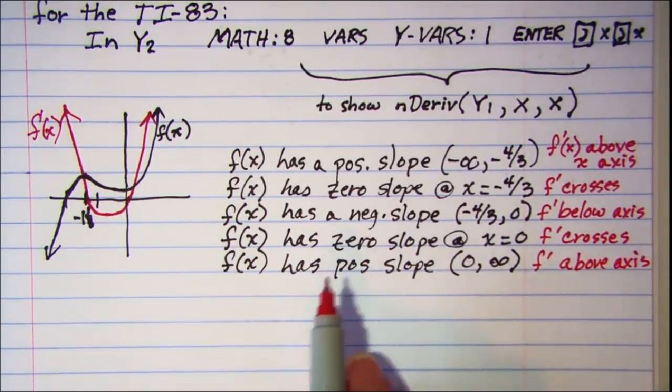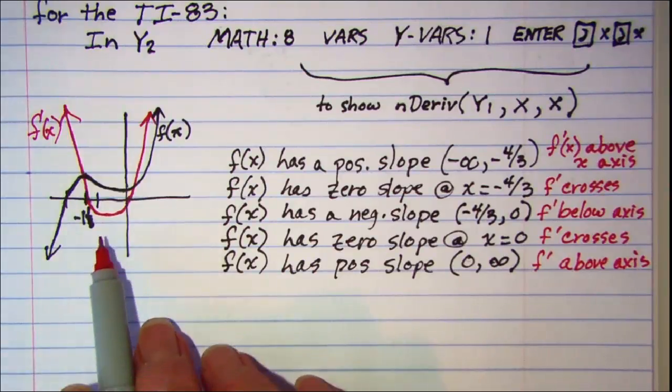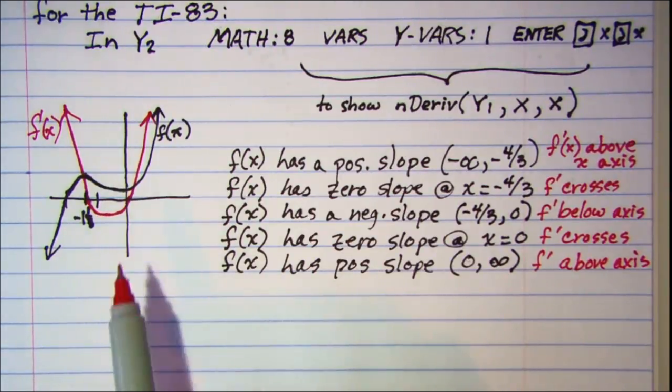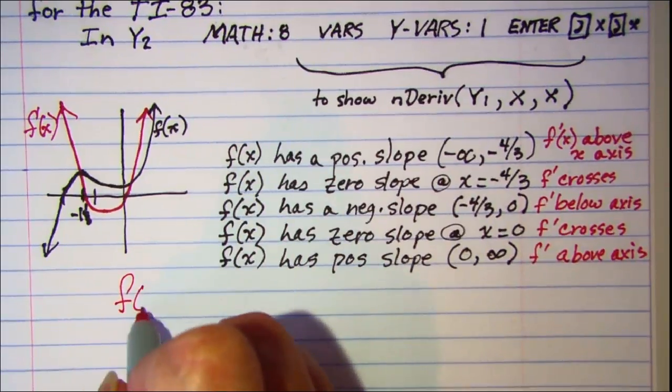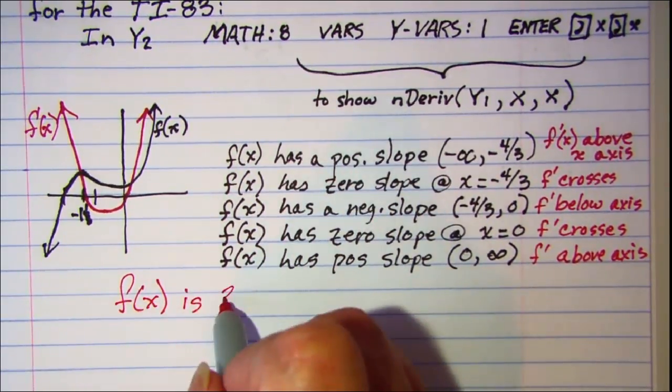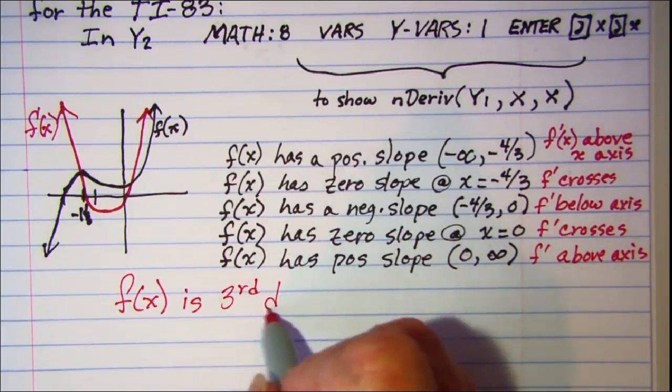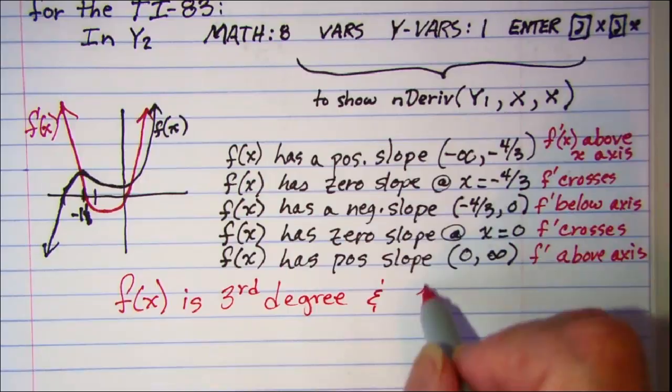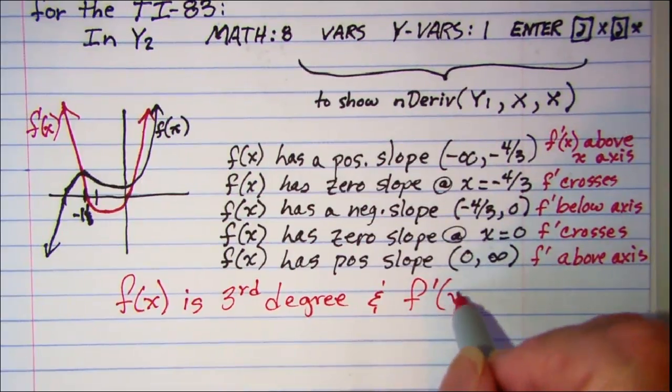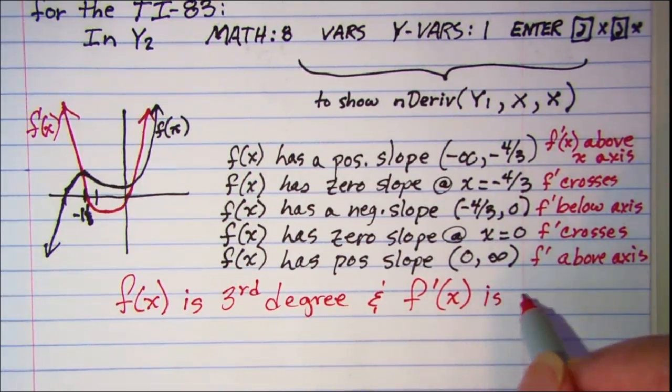So there is a relationship between the graph of a function and the graph of its derivative. Also note that my f(x), my function is third degree, and my derivative f' is second degree.